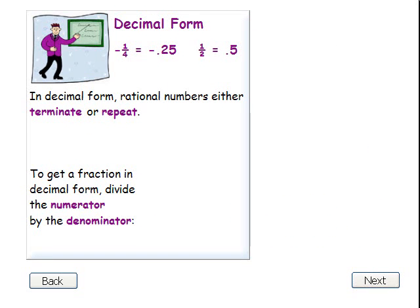Fractions can also be written in decimal form. For example, negative one-fourth equals negative 0.25, and one-half equals 0.5.